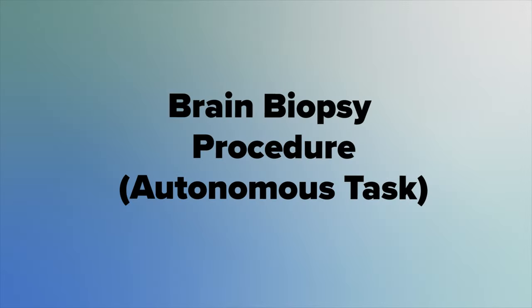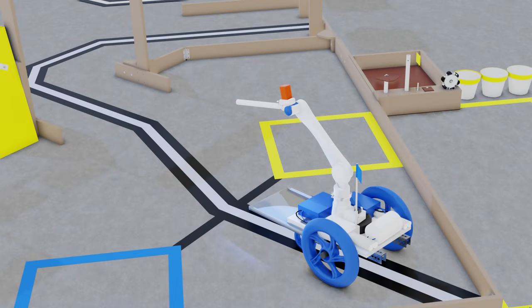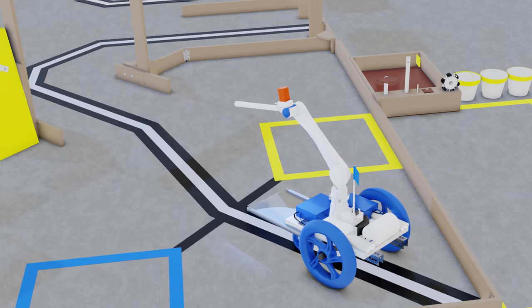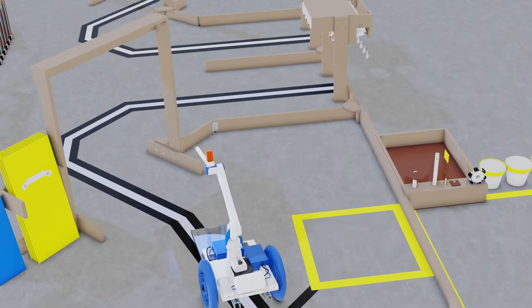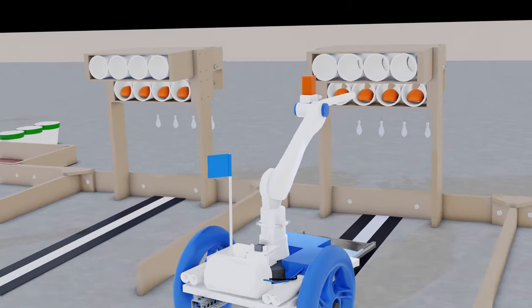The brain biopsy procedure begins in the autonomous start area. A brain imaging tracer isotope has been injected into the Sim Body to trace blood flow to the brain. This results in a color contrasting path shown here as black and white lines. Your robot will need to follow this tracer path from the robot autonomous start area to the brain using the 12-inch needle attachment.